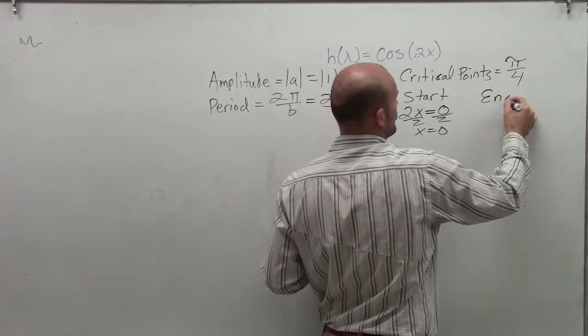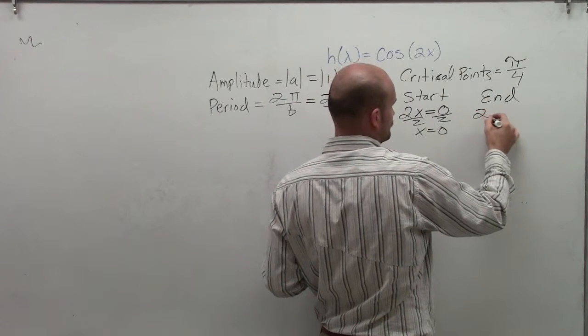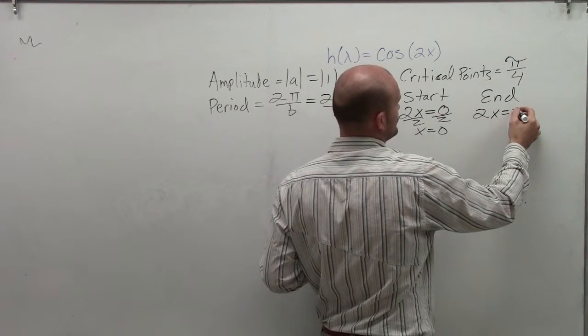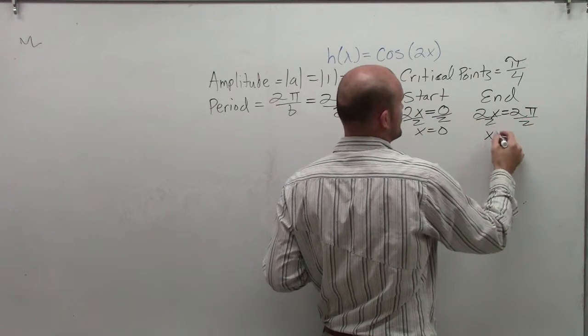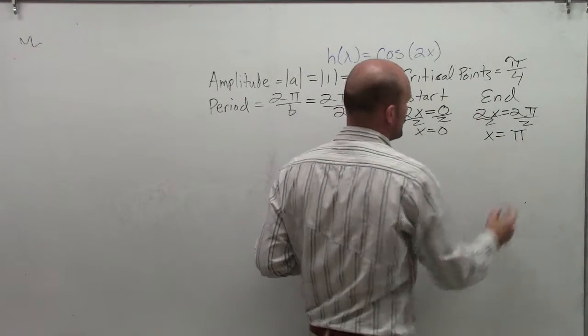The end point is now going to be 2x equals 2π. However, when I solve for x in this case, instead of getting 2π, I'm now going to get π.